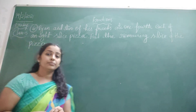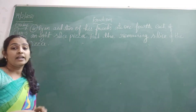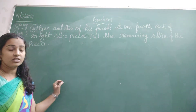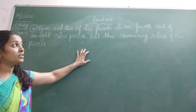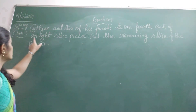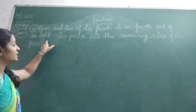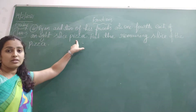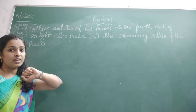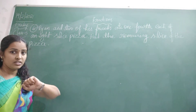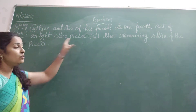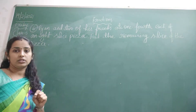So here, if you see, Dreyan and his two friends ate pizza. So how did they eat? One-fourth of an eight-slice pizza. Eight slices are there, and each person ate one-fourth part.